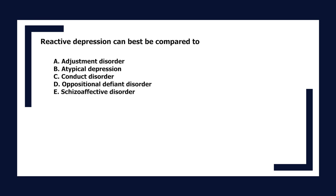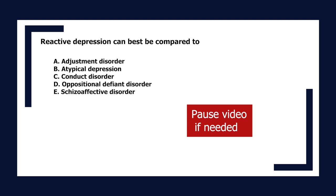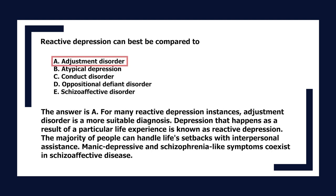Reactive depression can best be compared to: A. Adjustment disorder, B. Atypical depression, C. Conduct disorder, D. Oppositional defiant disorder, E. Schizoaffective disorder. The answer is A. For many reactive depression instances, adjustment disorder is a more suitable diagnosis. Depression that occurs as a result of a particular life experience is known as reactive depression. Manic-depressive and schizophrenia-like symptoms coexist in schizoaffective disease.